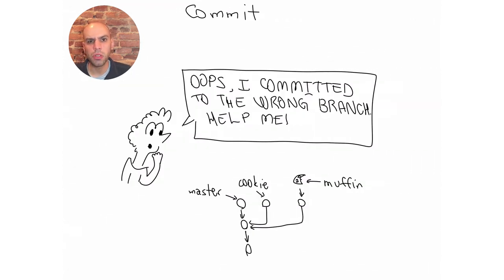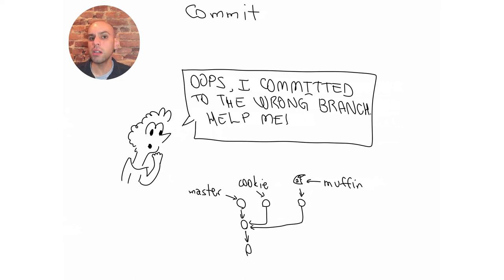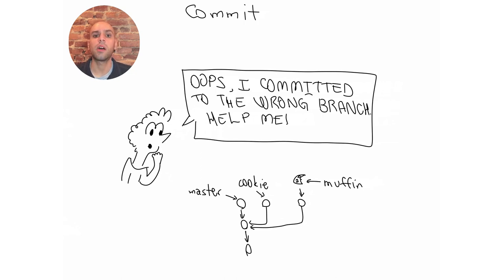Oops, number two. This is based on many real stories with real students. It often happens that people commit to the wrong branch. In this case, Alice was working on her cookie recipe, but she committed to the muffin branch. Now she wants this commit to appear in the right place, and she also wants to get rid of the wrong commit. Can you help Alice this time? Pause the video, refer to the cheat sheet down below, find the commands that you would like to run, and then come back and we'll try to solve this problem together.